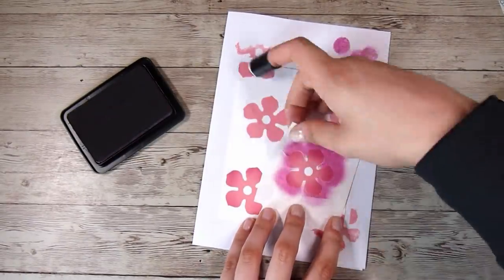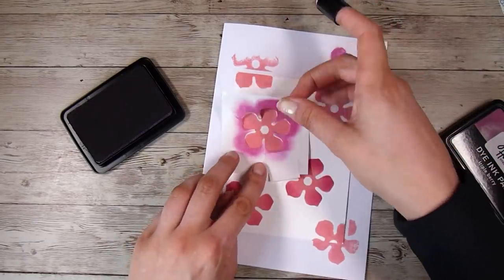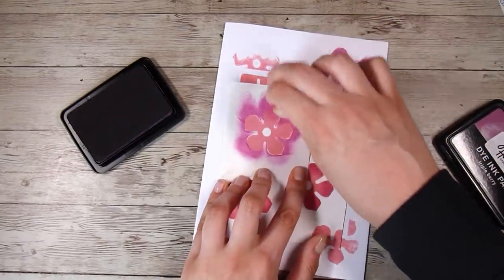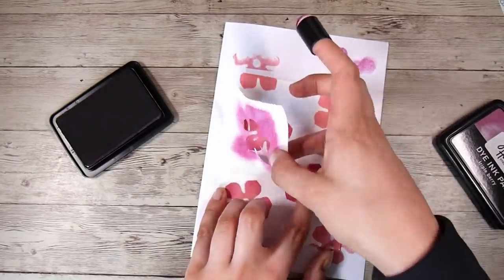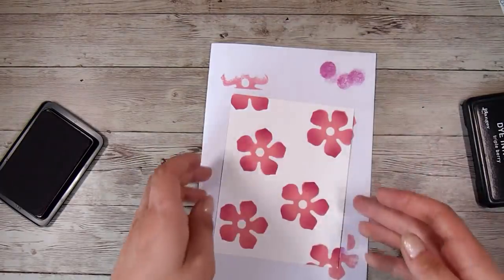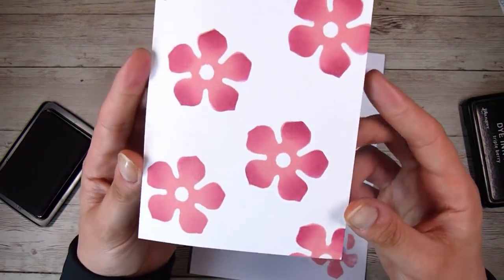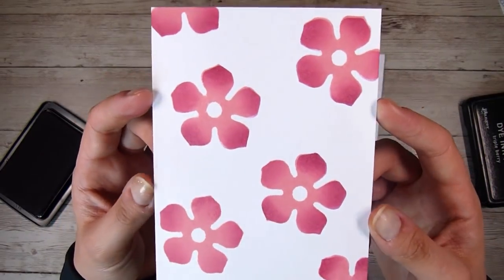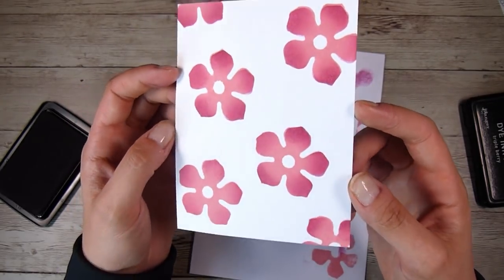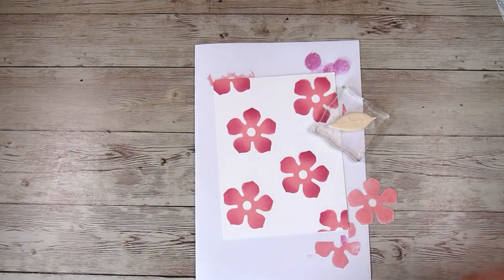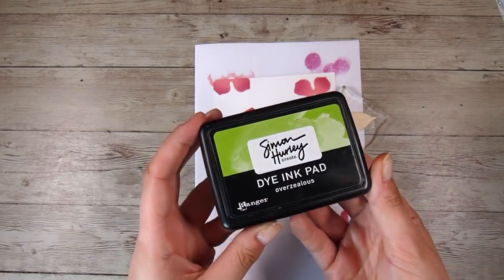So you can see what a difference it makes. I'm going to speed through the rest of them here. And you can see that it just doesn't make them look quite so flat that we've just stamped one color. Now, definitely what you could do is use a rocking method when you are stamping it and get two different colored inks on one stamp when you're stamping it. But honestly, I find this way just as quick and a little bit less messy.